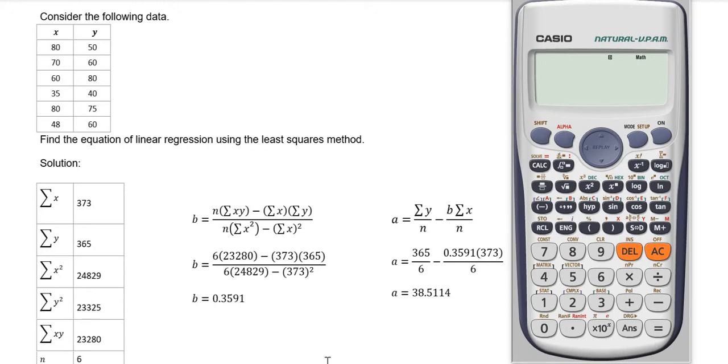The next step is to change the mode of this calculator to use statistical mode. Press the mode button, then press number 3, and then we need to choose option number 2. Press number 2.